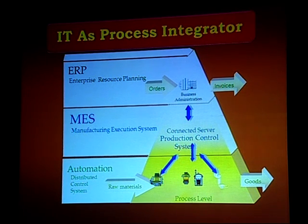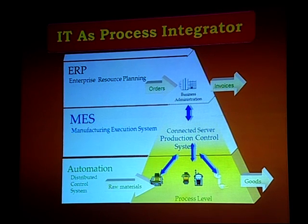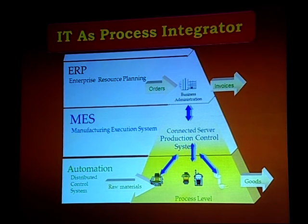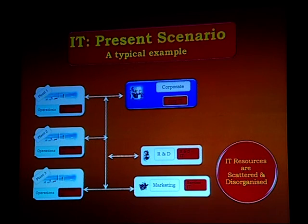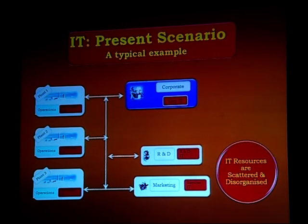IT is central to this and is intensively involved in all three stages: ERP, MES, and automation. Most companies have gone for ERP, with process-level automation at the bottom and ERP at the top; MES is emerging. The IT resources are scattered and disorganized. There are multiple IT divisions — each plant has its own IT division, corporate office has its own IT, R&D and marketing as well. IT is scattered, and that is a serious problem.